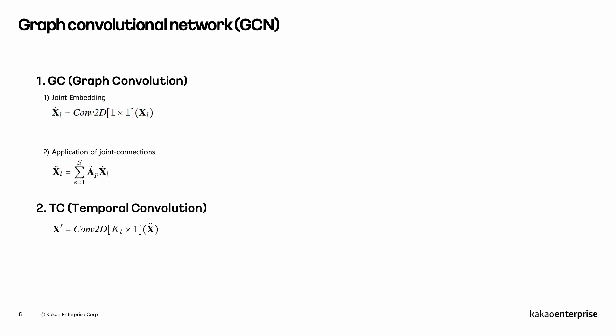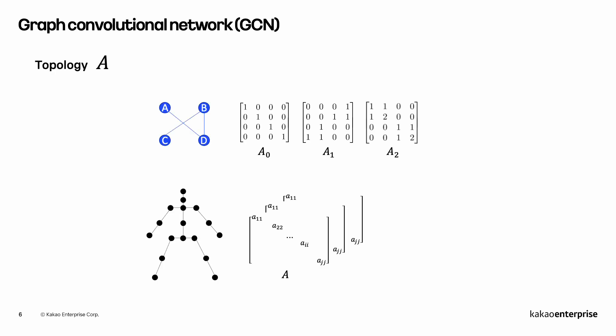TC uses a KT-sized 1D kernel striding along time axis for temporal encoding of each joint. Topology A represents connections of nodes in graphs, which can be a normalized form of adjacency matrices or its variations.